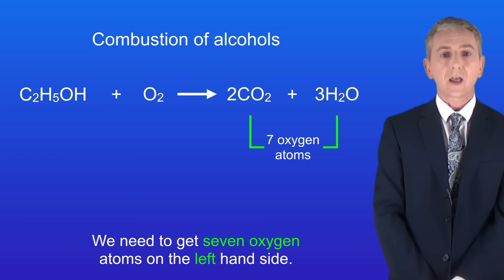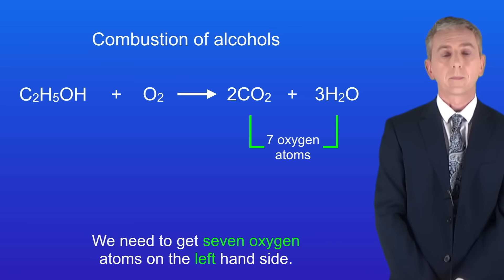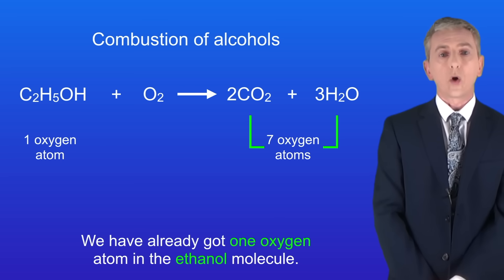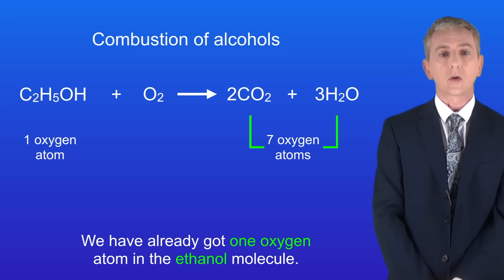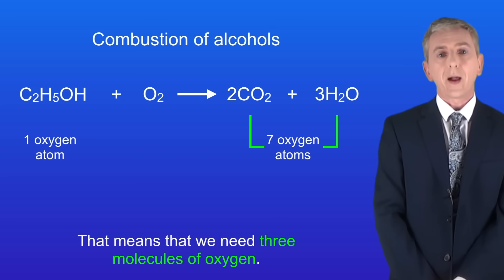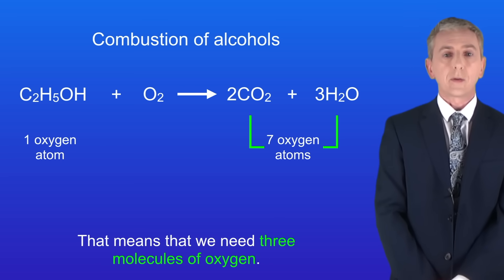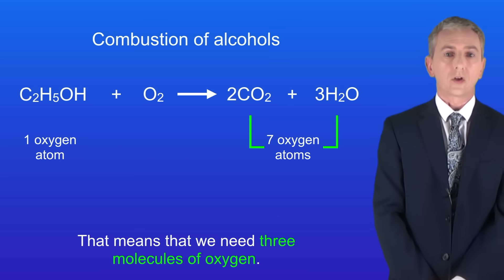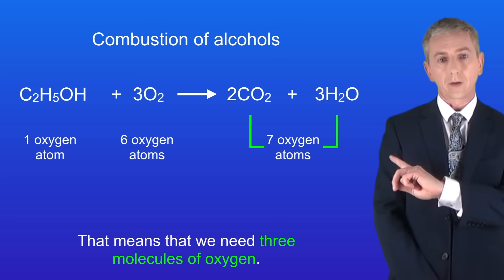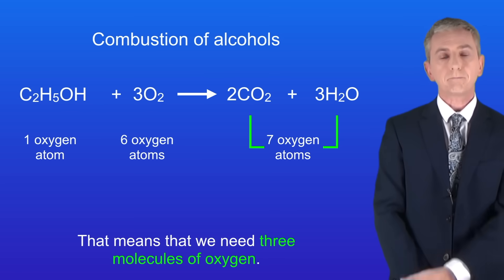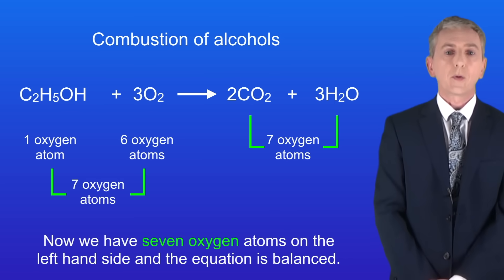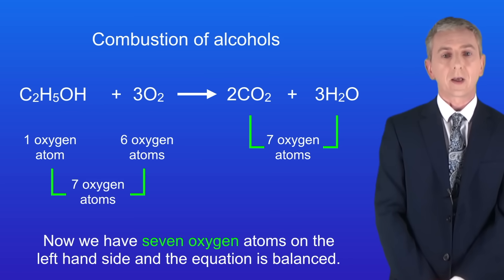We need to get seven oxygen atoms on the left hand side. We've already got one oxygen atom in the ethanol molecule, so that means that we need three molecules of oxygen. Now we've got seven oxygen atoms on the left hand side and the equation is balanced.